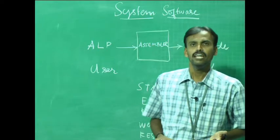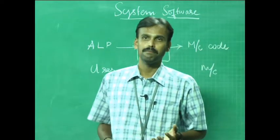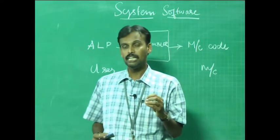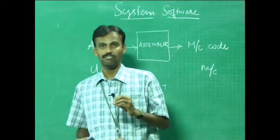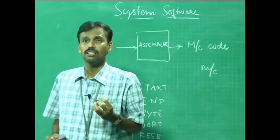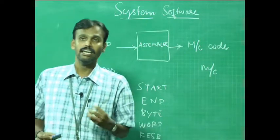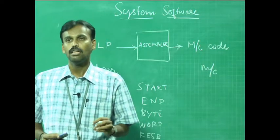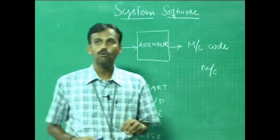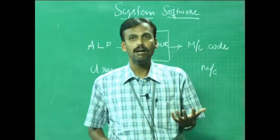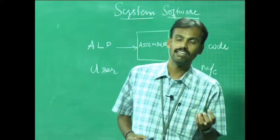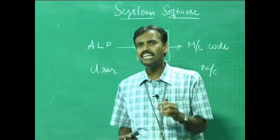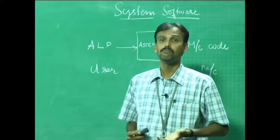Translation happens with respect to registers and addresses. The register names A, X, L, B, S, T, F, PC, and SW have corresponding values 0, 1, 2, 3, 4, 5, 6, 8, and 9. These are preloaded into the symbol table.